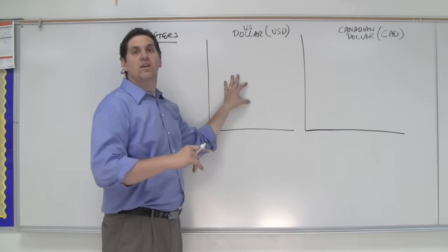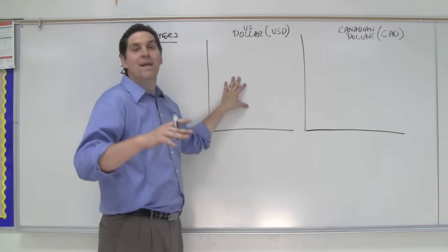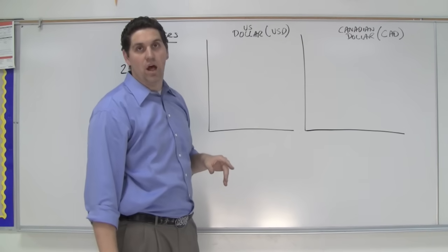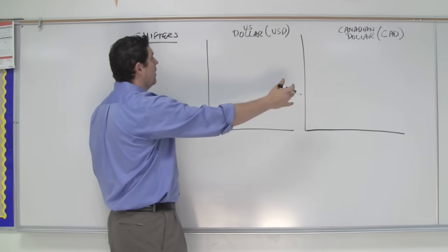Right now, we've got two different currencies. This is not products. This is currencies. Supply and demand for dollars, supply and demand for Canadian dollars. US dollars, Canadian dollars.